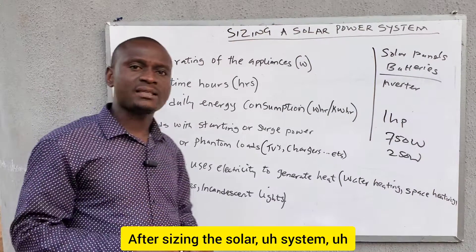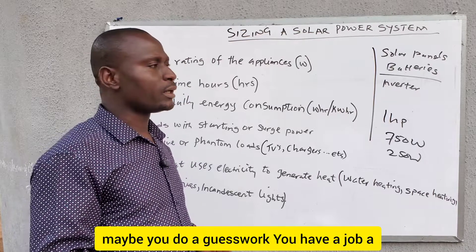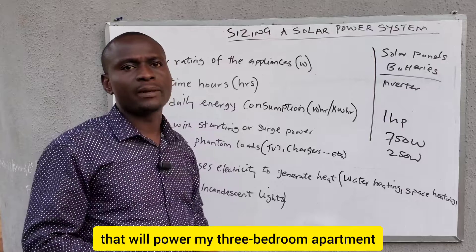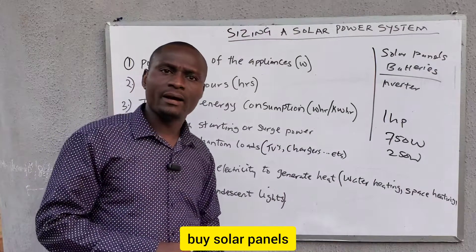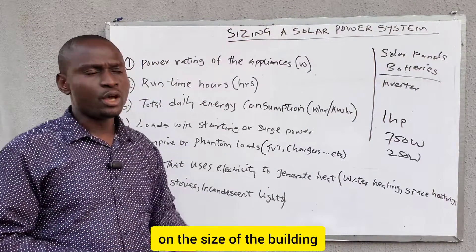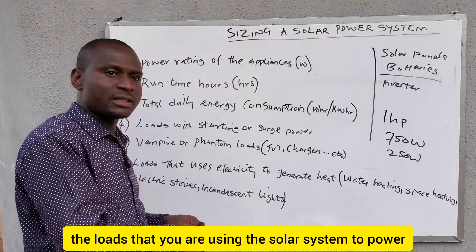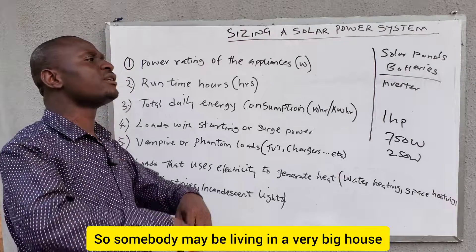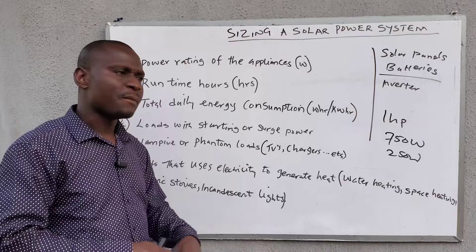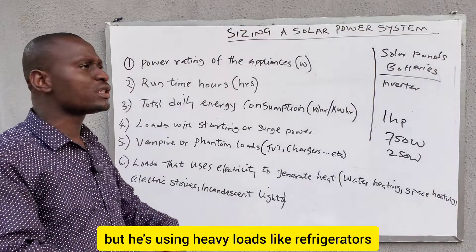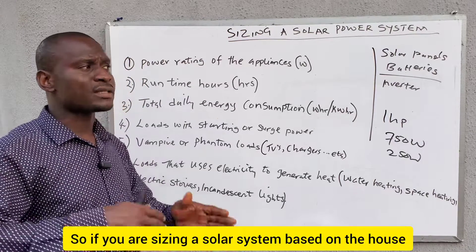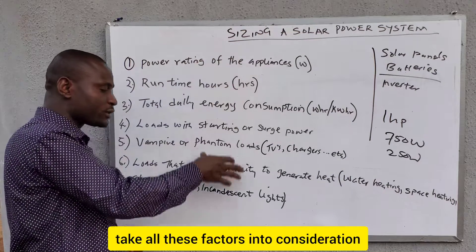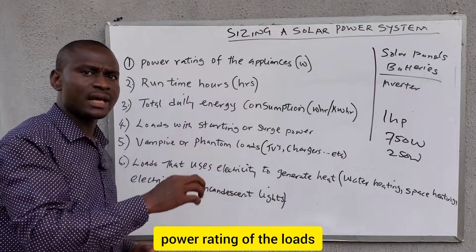When you don't take these things into consideration and you do a guesswork — for example, a client calls and says they live in a three-bedroom apartment and need solar — you must not just rush to the market and buy an inverter, batteries, and solar panels. You do not size a solar power system based on the size of the building. You size it based on the loads you are using the solar system to power. It is the loads that determine the size of the system, not the building. Somebody may live in a big house but only need a few appliances, while someone in a small apartment may use heavy loads like refrigerators and water pumps. So check and take all these factors into consideration.